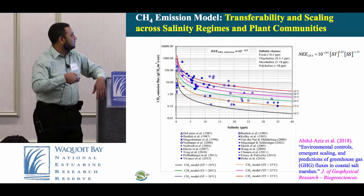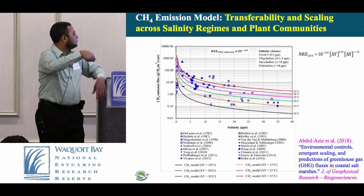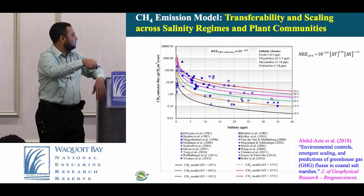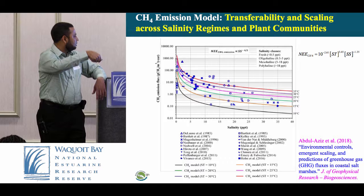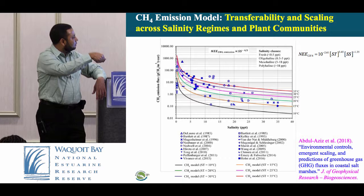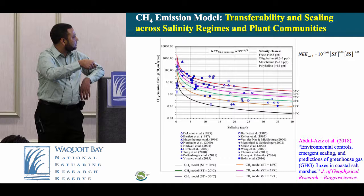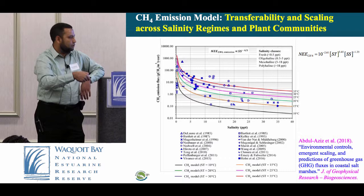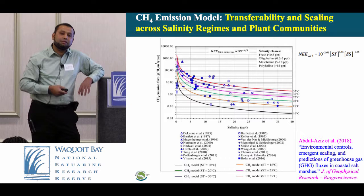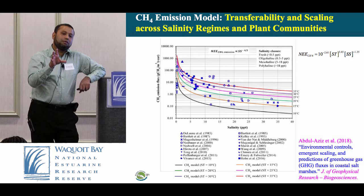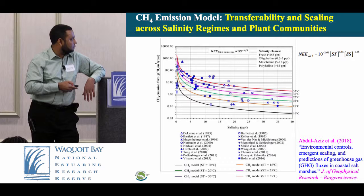Using published data from literature at different temperatures — 10, 15, 20, 25, 30, 35 degrees Celsius — we plotted methane fluxes with increasing salinity following this equation. The published data from across the world falls within this range. You can see freshwater marsh, oligohaline (up to 5 ppt), mesohaline (5–18 ppt), and polyhaline (greater than 18 ppt). That gave me hope that we would find emergent scaling laws that generalize.